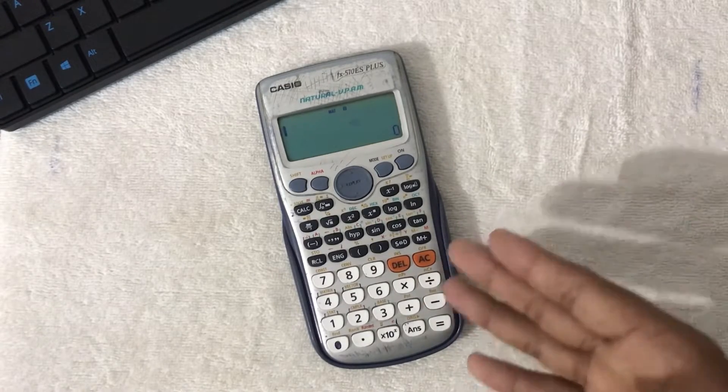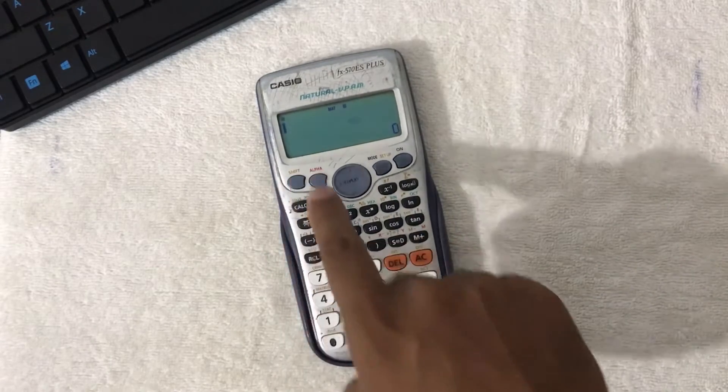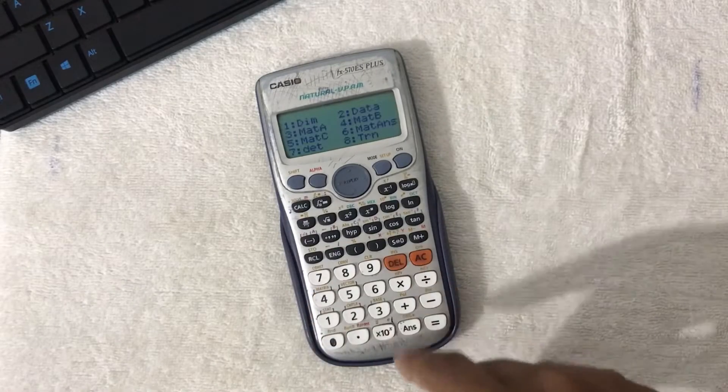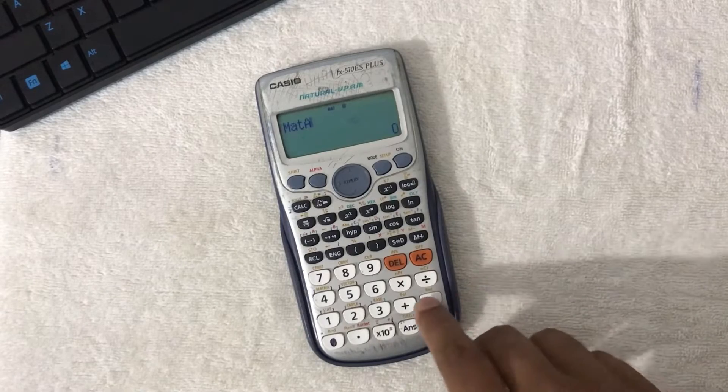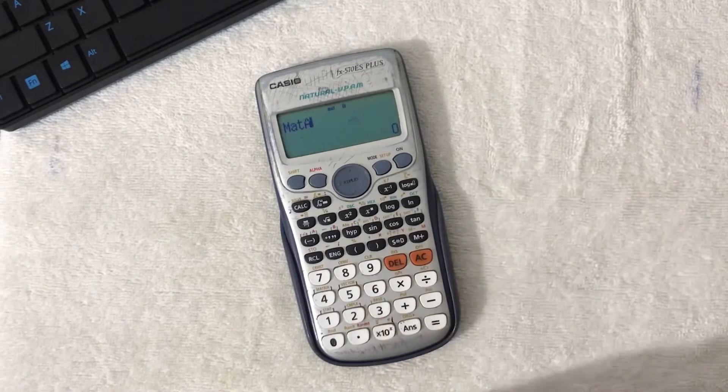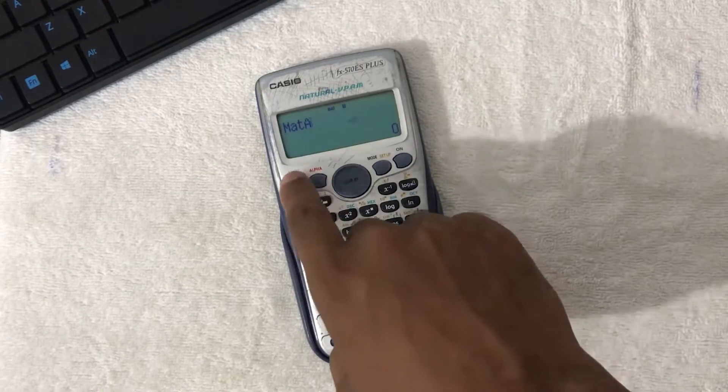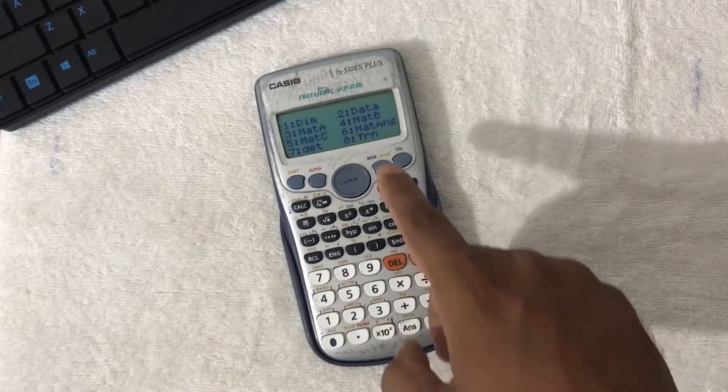Now we need to multiply. For that, you need to click shift, matrix. There will be an option for matrix A, which is the third one. No need to click on the multiplication signal. Next, shift, matrix - that will be matrix B, which is number four.